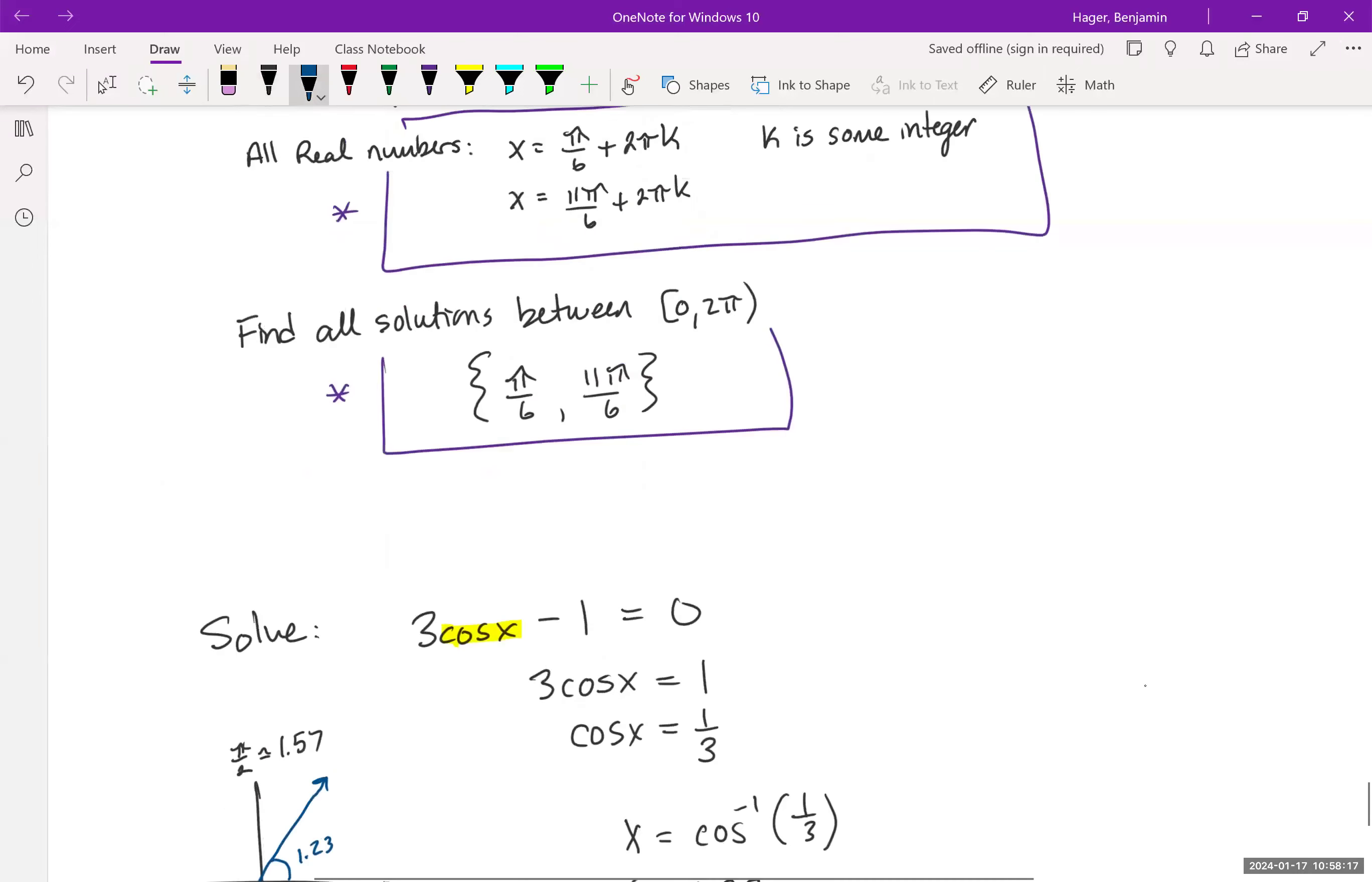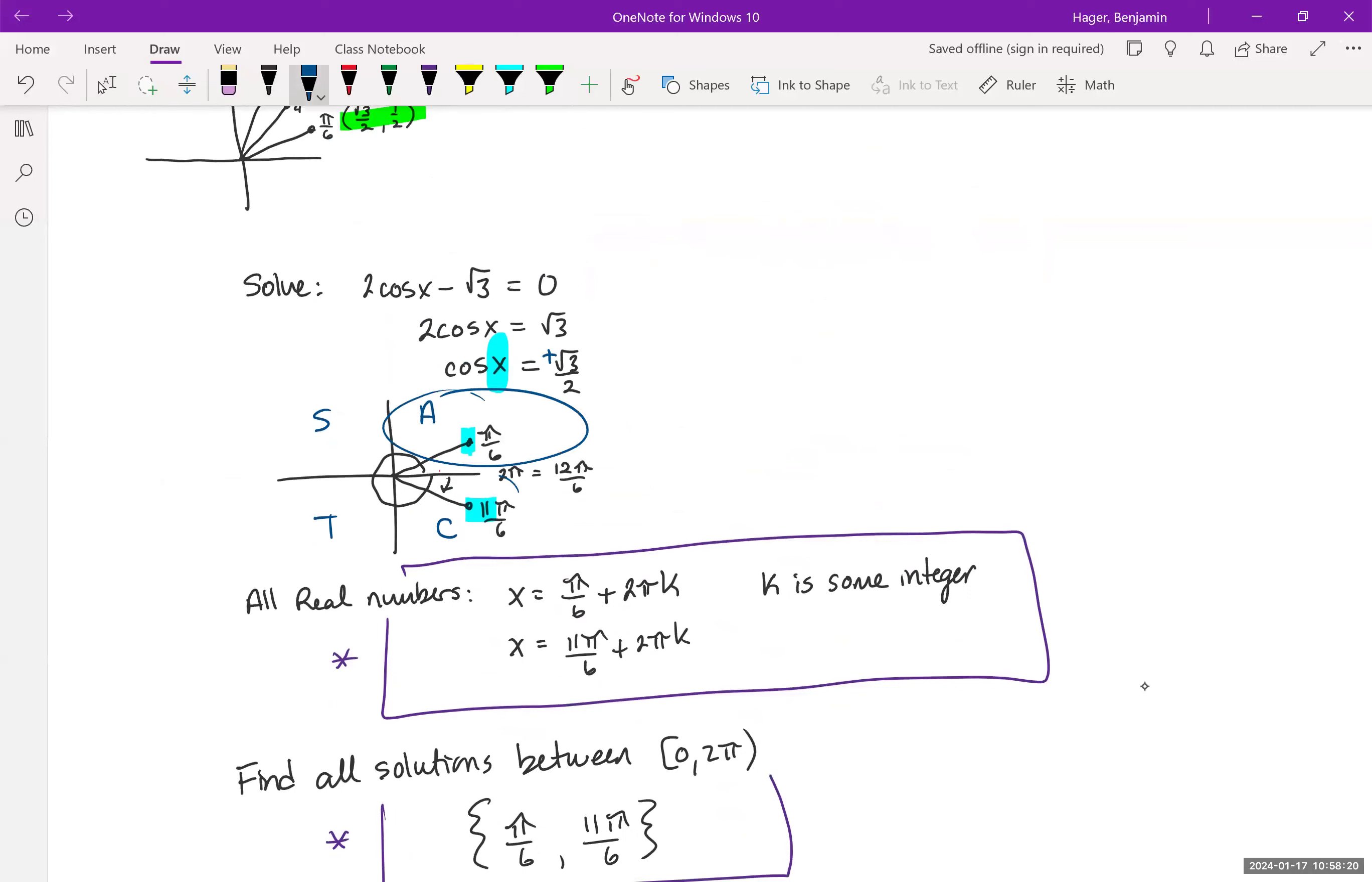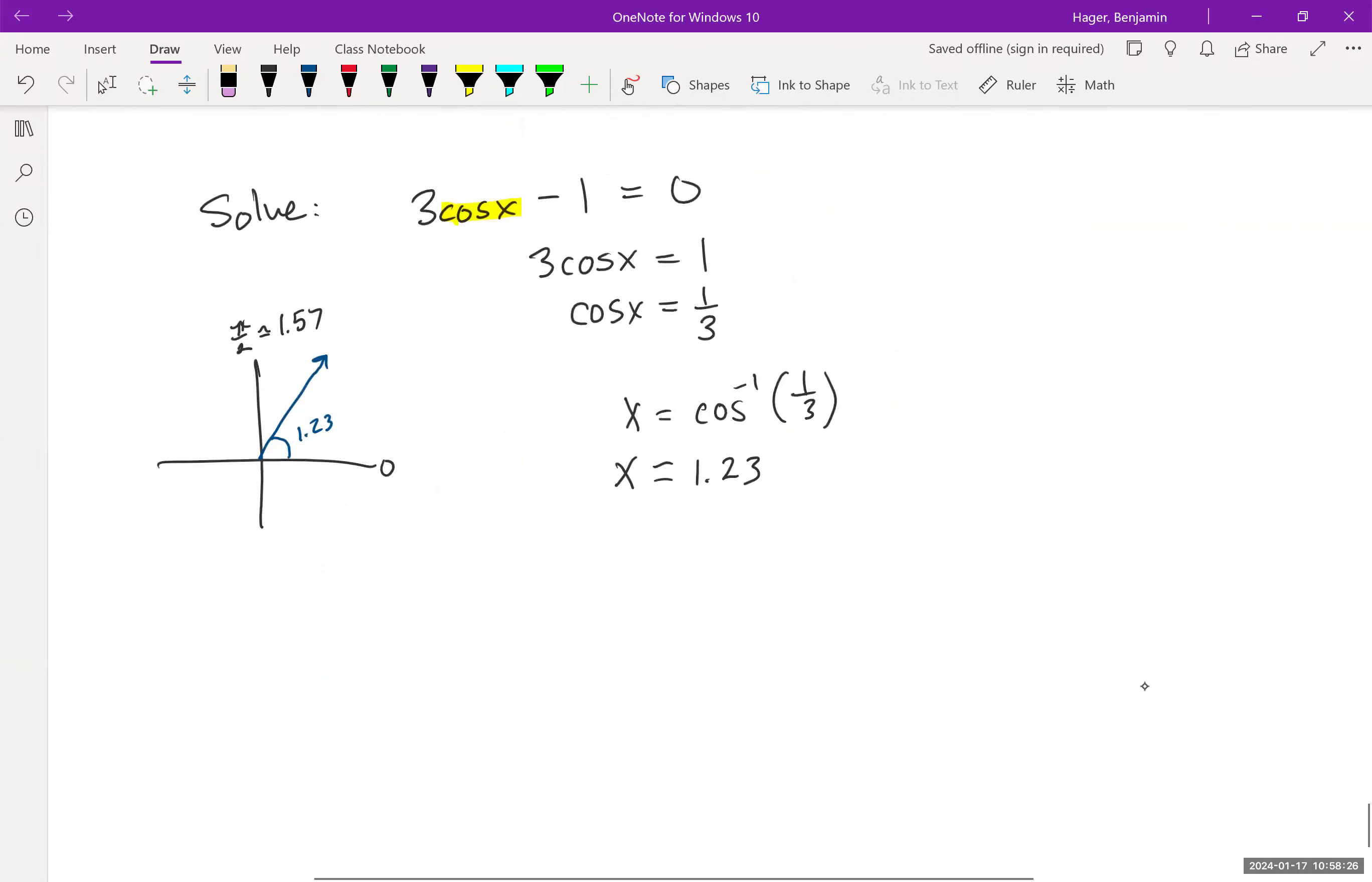If you notice from this last example, we found two places that satisfied our equation. When I put this in the calculator, I'm only getting one result. Does this only have one solution? No, it's got more. This is where you have to be extremely careful using inverse trig functions. It can become very easy, especially if this problem starts out really ugly and you work your way down, that once we get to put things in the calculator and we get our answer, we're done. We're not done yet.